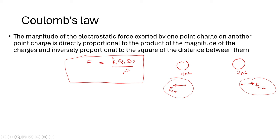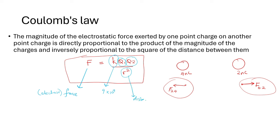Let's break down the Coulomb's Law equation. F represents the electrostatic force between two point charges. K is known as Coulomb's constant or the proportionality constant, with a value of 9 × 10⁹. Q₁ is the first charge, Q₂ is the second charge, and r is the distance between the charges.